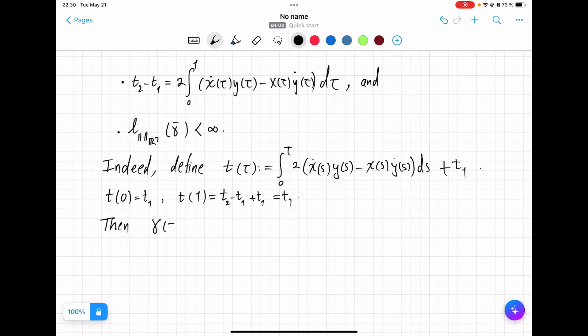Then, gamma of tau, the horizontal lift given by X, tau, Y, tau. These are the same coordinates as the ones in gamma bar. And then, we add the third one, which we built right above.